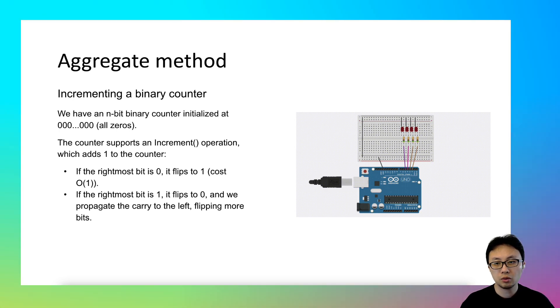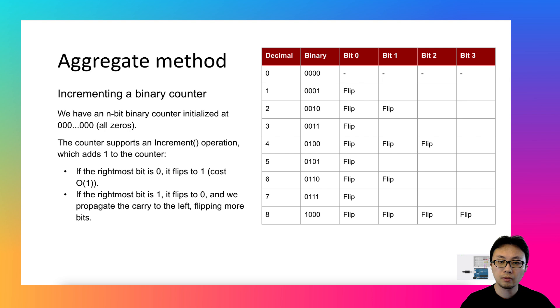The number of flips represent the cost of this increment operation. An example of a 4-bit binary counter looks like this. There are 6 columns in total. The leftmost column represents the decimal number, and its neighbor column represents the corresponding binary number with 4 bits.